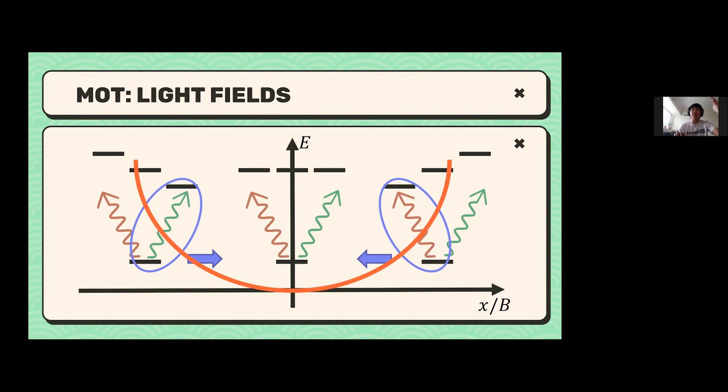Off-center, the energy levels are split: to the left where the magnetic field is negative, they split downward; to the right where it's positive, they split upward. An atom to the left can now drive the sigma-minus transition because it's resonant, so a photon pushes it toward center. To the right, the sigma-plus photon pushes it left toward center. Effectively, the atom feels a restoring force whenever it's off-center, forming an effective harmonic potential — this is the magneto-optical trap.